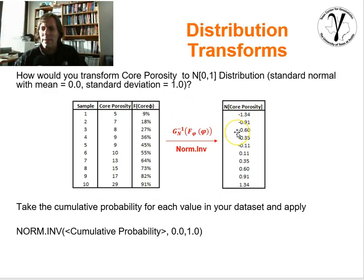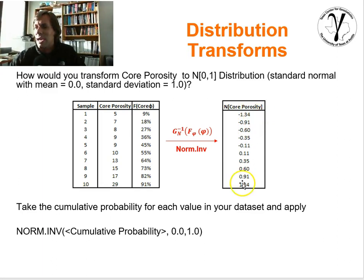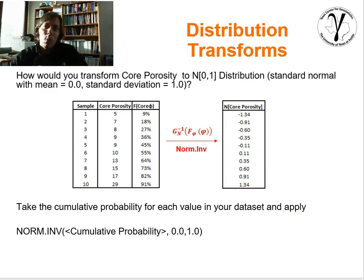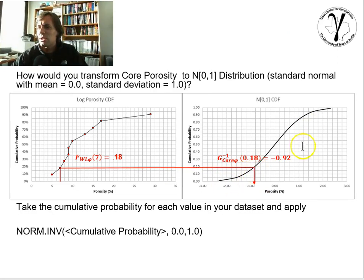Repeating that exercise for all 10 data points transforms our original core porosities through their cumulative probabilities into normal score transforms, denoted NS(core porosity). Note that we now have negative porosity values — that's expected because normal score porosity has a mean of 0 with symmetric values. You can see negative 1.34 and positive 1.34. Now the data is transformed to standard normal and would be ready for Gaussian simulation or any statistical analysis requiring a Gaussian assumption. Afterwards, we can back-transform using the reverse operation to return to original units.